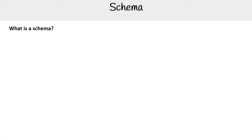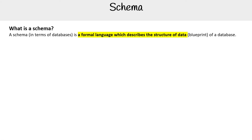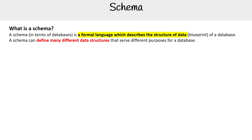Let's take a look at schema versus schema-less. So what is a schema? A schema in terms of a database is a formal language which describes the structure of data — a blueprint of a database. A schema can define many different data structures that serve different purposes of a database.